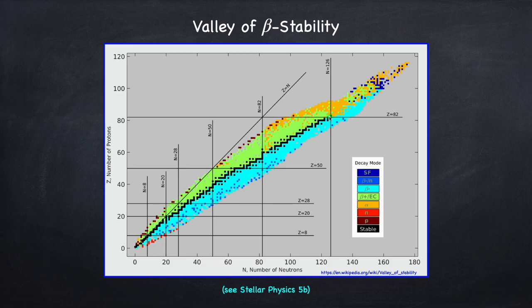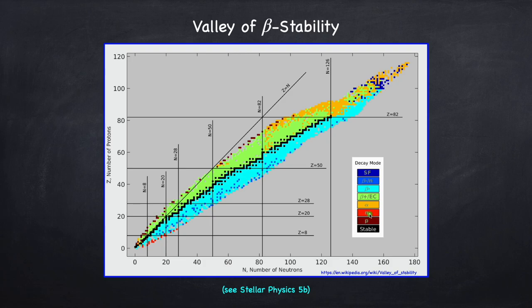The S process will make everything up to the edge of the valley of beta stability. For the R process, we start with a seed nucleus and rapidly capture neutrons, moving to the right until we get to the darker blue and red dots, which are unstable due to neutron emission — this is called the neutron drip line, analogous to the proton drip line for the RP process. Once we pop on a neutron, it just pops right back off. So once we reach the neutron drip line, we zigzag along it making heavier and heavier nuclei. We can basically go as far as we want, because again there's no Coulomb barrier to worry about. So neutron capture — the S process and the R process — are thought to be the primary mechanisms for making nuclei beyond the iron peak.